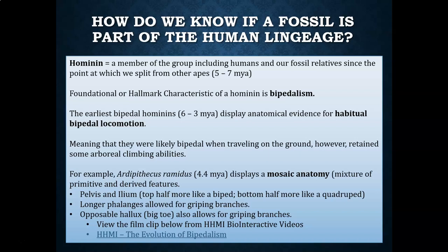Bipedalism is considered to be the foundational or the hallmark characteristic of what it means to be human, meaning that this is the very first characteristic that split us from the rest of the apes. The earliest bipedal hominins that date between 6 and 3 million years ago display anatomical evidence for what we call habitual bipedal locomotion, meaning that these hominins were likely bipedal when traveling on the ground or when standing on branches to reach higher hanging fruit.